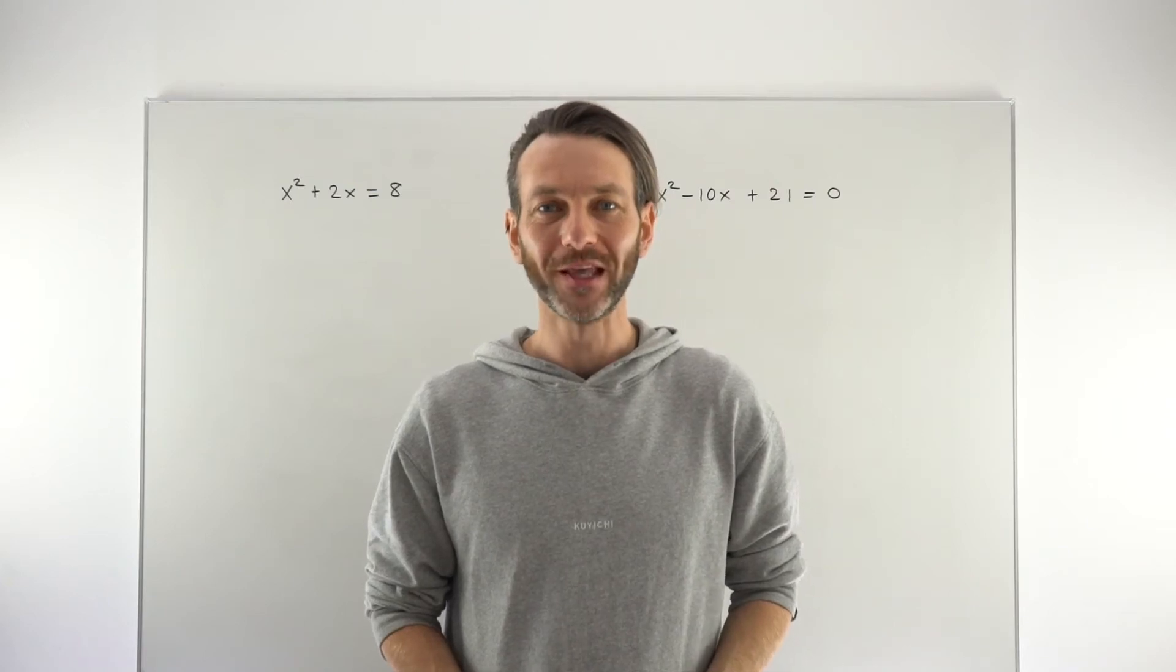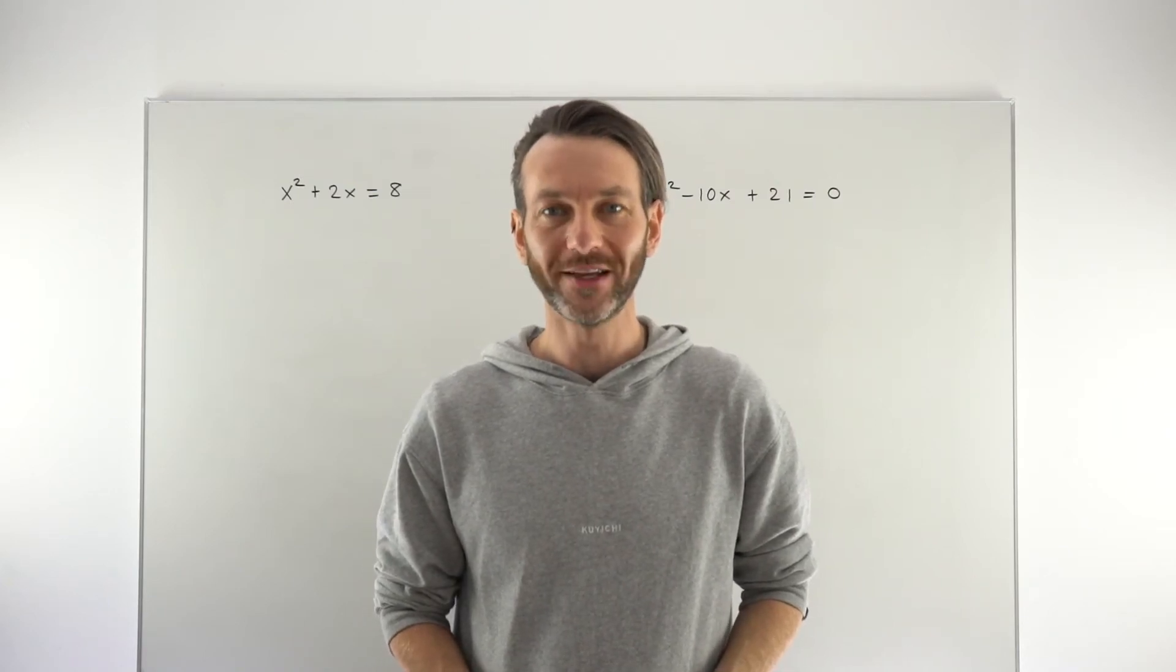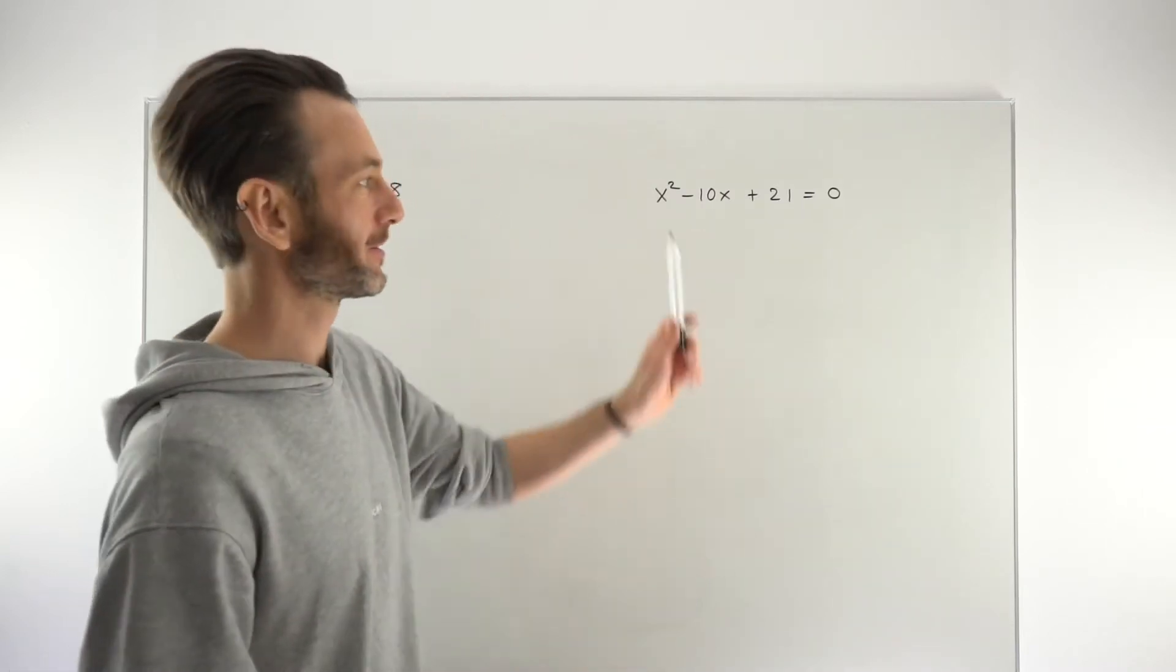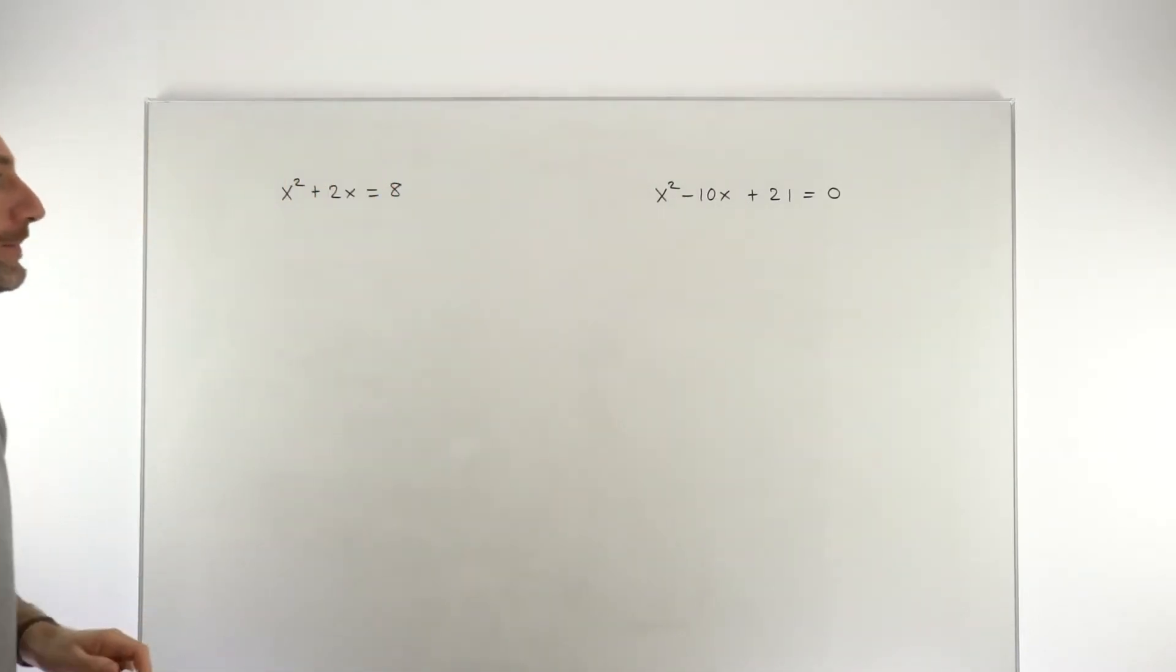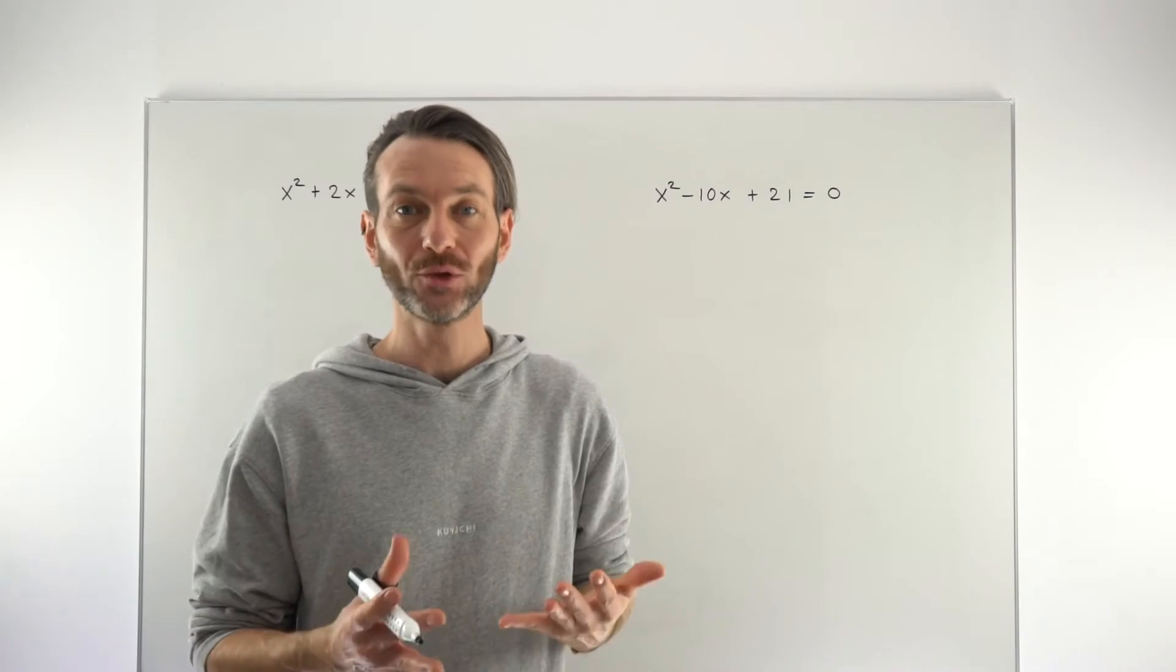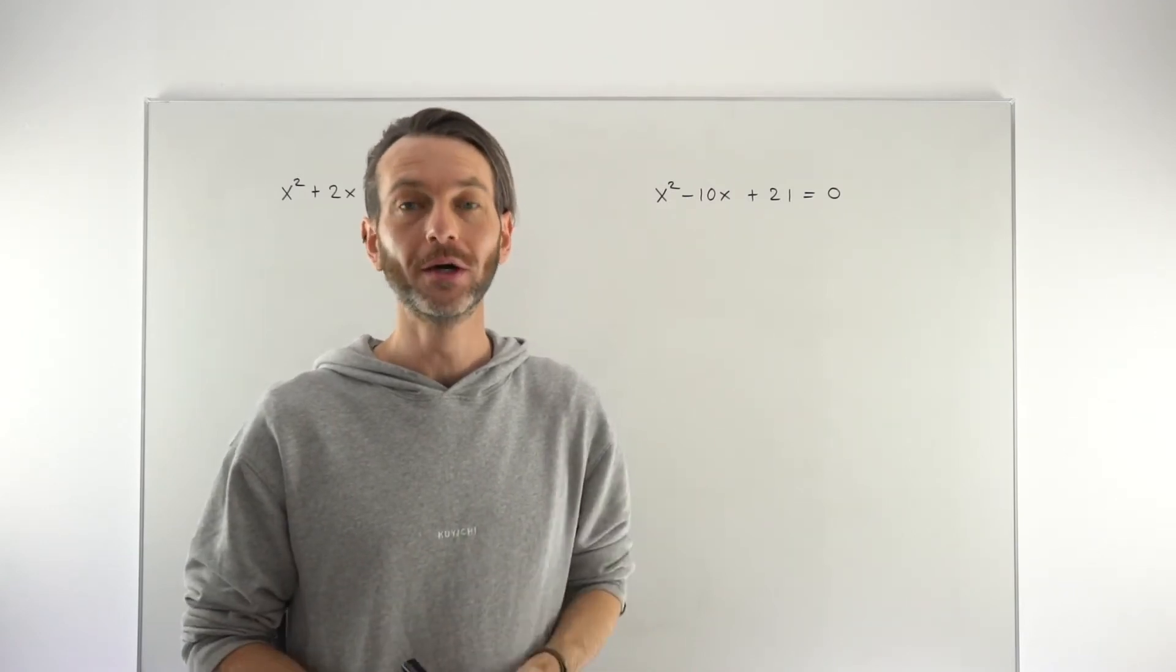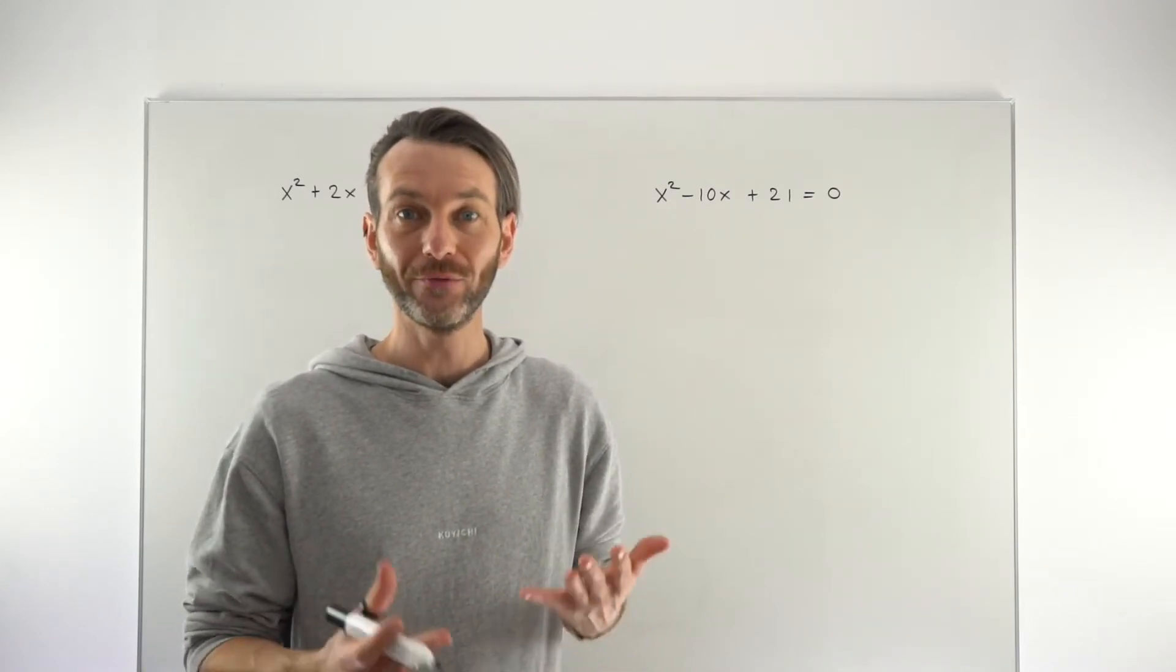In this video we're going to look at a common mistake students make when trying to solve quadratic equations and I'm going to demonstrate this by looking at these two examples. So remember a quadratic equation is one which contains an x squared term as the highest power and these need to be solved by factorising.